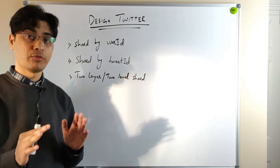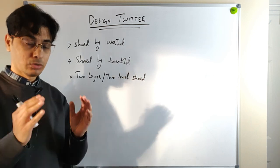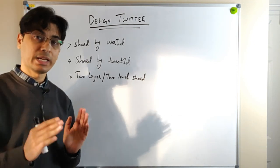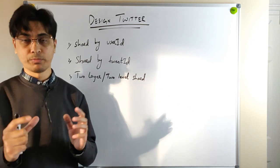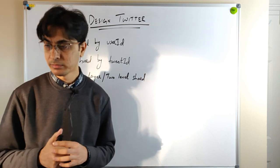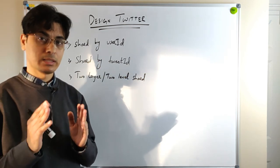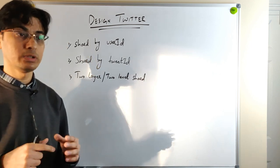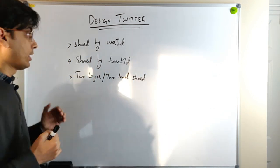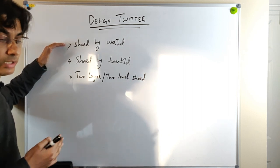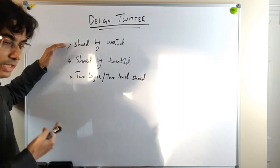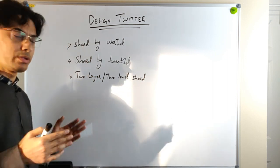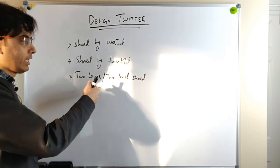Between these two approaches, I prefer shard by user ID. However, if the service scales with many users, tweets, and celebrity users, instead of sharding by tweet ID I would prefer a two-level shard by user ID and tweet ID. In this approach, the first layer shards by user ID to determine a group of sub-partitions, then the second layer shards by tweet ID to determine the specific partition — so we only query a small number of partitions per user.